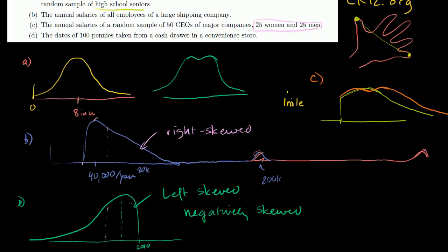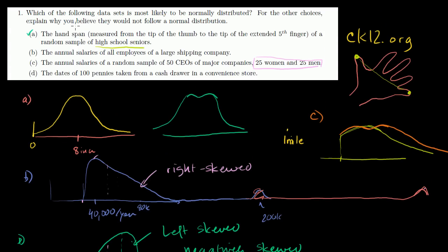So to answer the question, these are my feelings about all of them, but I would say, you know, for the other choices, explain why you believe they would not follow, well, they said, which of the following data sets is most likely to be normally distributed? Well, I would say choice A. But it's really, you know, a matter of opinion, at least in this question.